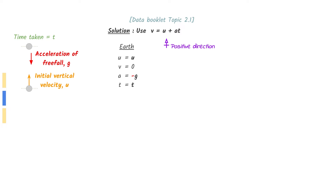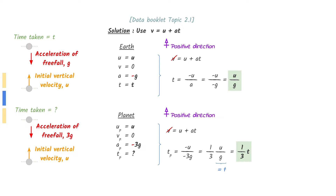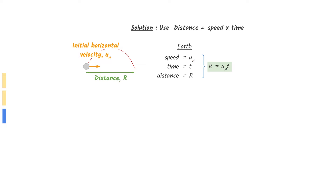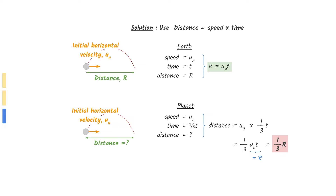Before we move on to find the maximum range, we need to find the time taken for the ball to reach its maximum height. Use v equals u plus at to find the time taken t in terms of u and g. Do the same calculation for the planet with the tripled acceleration. Substitute in for t — the time taken is a third of that of Earth. Now let's focus on the horizontal movement of the ball. The horizontal distance, in this case the range, can be found by multiplying the horizontal speed with the time taken. Since the time taken on the planet is a third of its initial time taken, the range is also a third of its initial range.